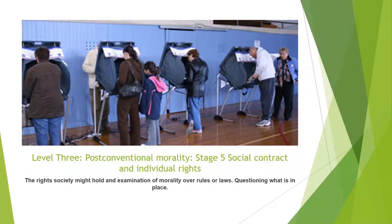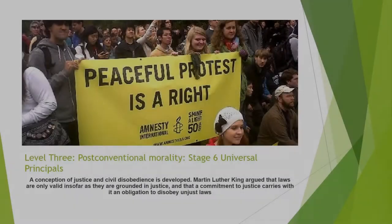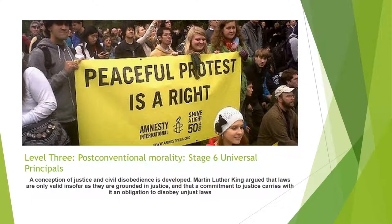Level 3, post-conventional morality, Stage 5: social contract and individual rights. A right society might hold an examination of morality over rules or laws, questioning what is in place. Voting is a way to change or examine the rules and regulations and help create them. Level 3, post-conventional morality, Stage 6: universal principles. A conception of justice and civil disobedience is developed here. Martin Luther King argued that laws are only valid insofar as they are grounded in justice, and that a commitment to justice carries with it an obligation to disobey unjust laws — that is civil disobedience.